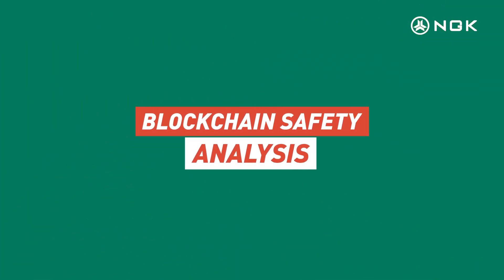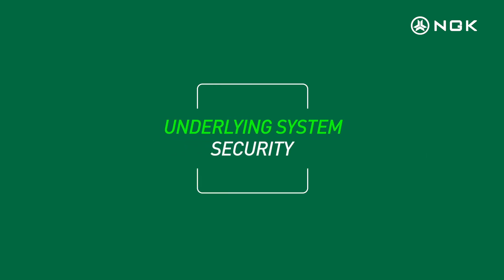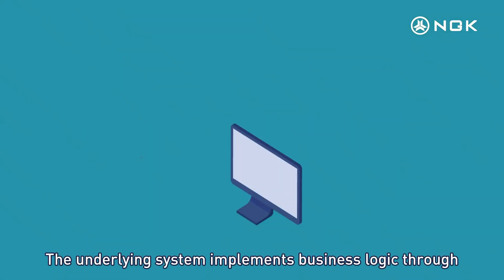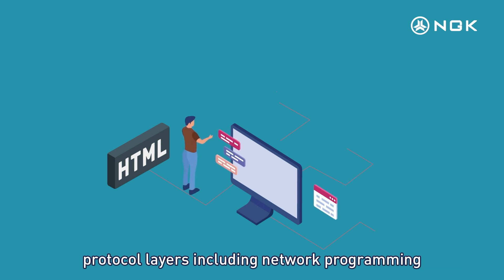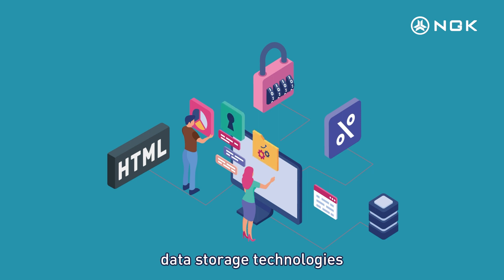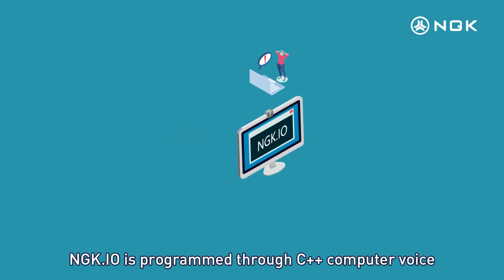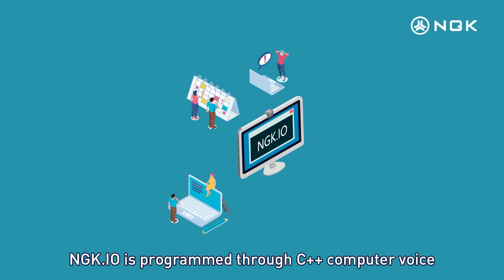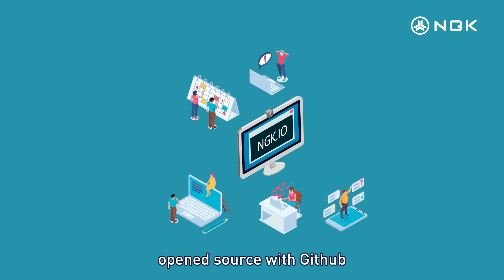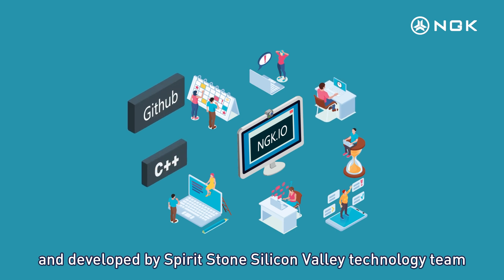Blockchain Safety Analysis. Underlying System Security: The underlying system implements business logic through protocol layers, including network programming, distributed algorithms, encrypted signatures, and data storage technologies. NGK.io is programmed in C++, open source on GitHub, and developed by the Spiritstone Silicon Valley Technology Team.